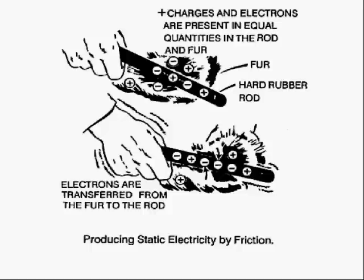One of the more effective ways to do this is to use rubber or plastic and rub it on something like fur or cloth. They are very effective at transferring charges. You can generate many thousands of volts this way.